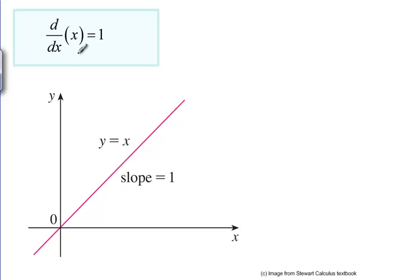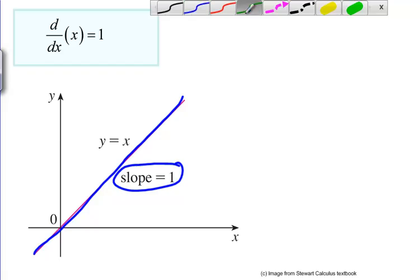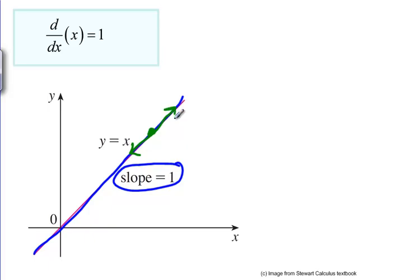The function X is a diagonal line with a slope of one. Any point on that diagonal line, the tangent line for that point is also the same line again and so it's also going to have a slope of one. So the derivative of X is going to be one.